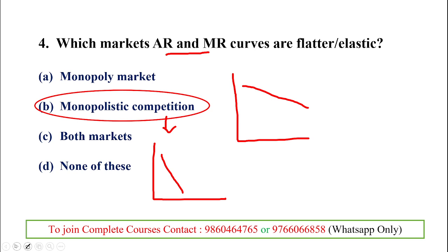The difference between monopoly and monopolistic competition: in monopoly there is only one firm, while in monopolistic competition there are many firms. However, in monopolistic competition, the products they sell are differentiated — the basic product is the same but there are differences in features or quality.